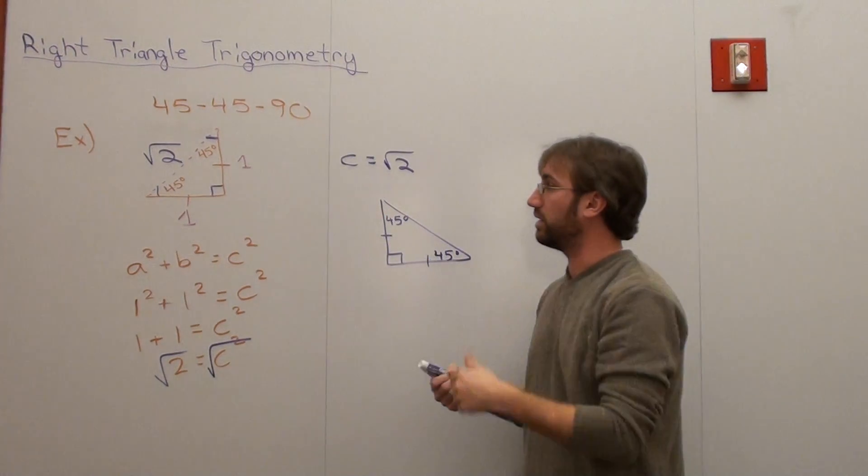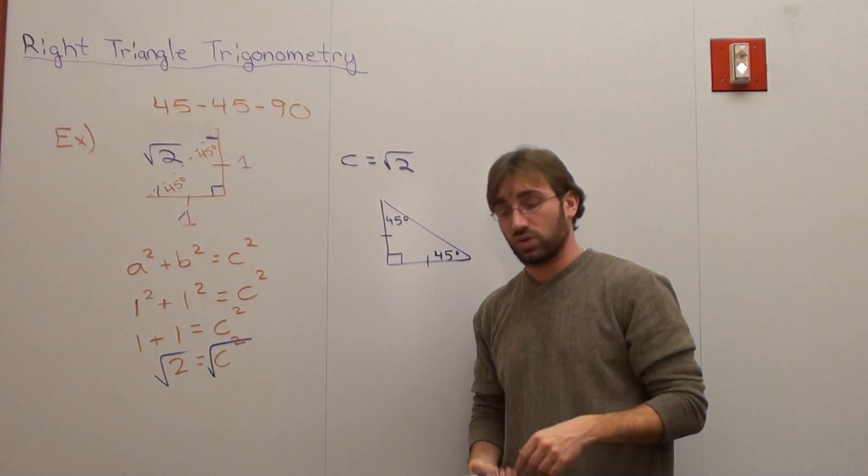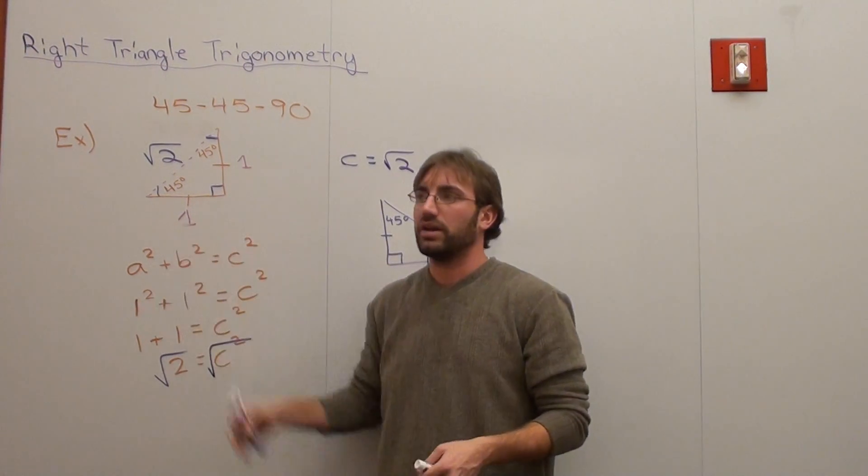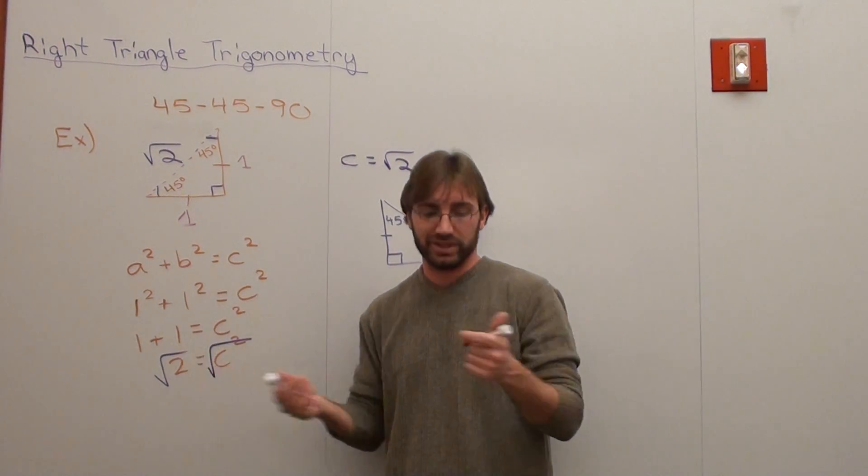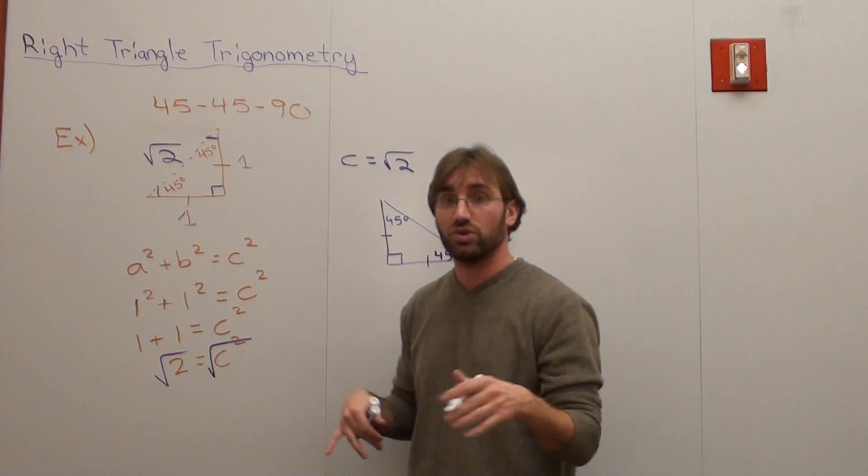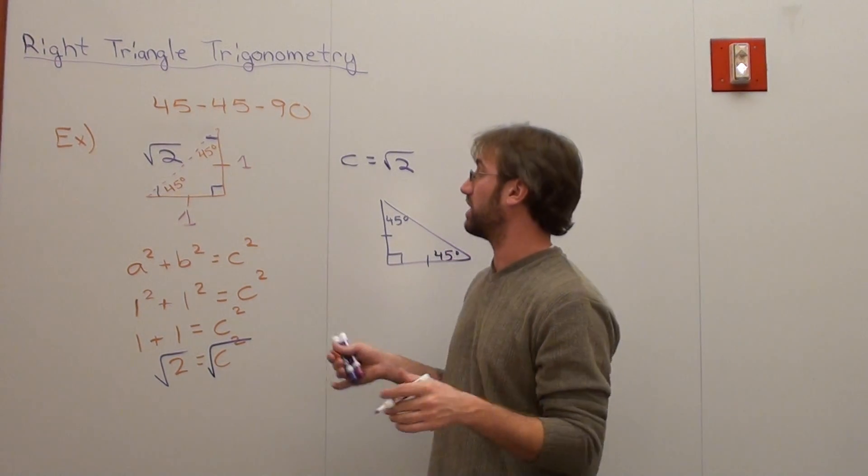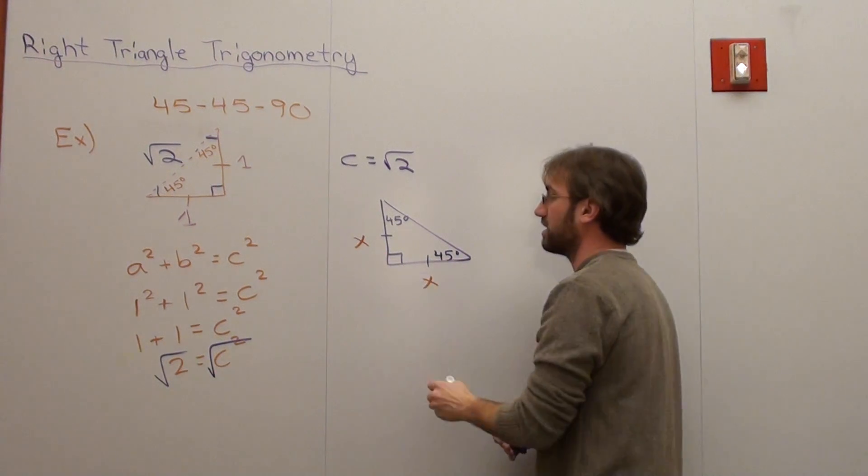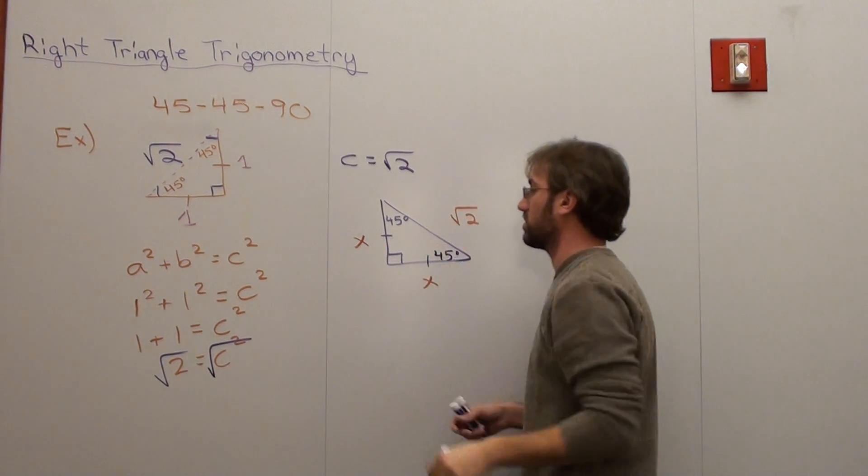45-45-90. Now both legs are equal to 1. The biggest side is equal to square root 2. How do we write it in the general sense? Well, instead of calling it 1, let's call it a variable. And the variable that we always use, that seems to be the most popular, is x. So what you're basically going to do is replace every one that you see with an x. So this is x, this is x, and this is root 2.